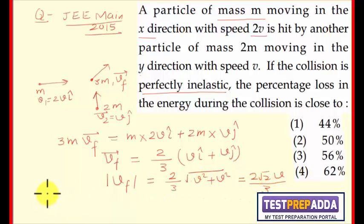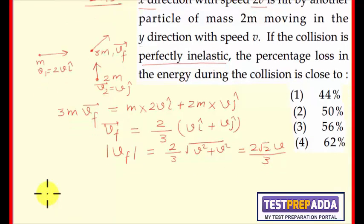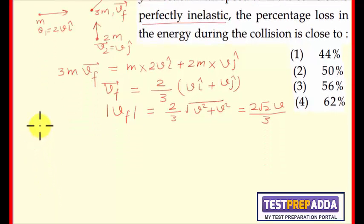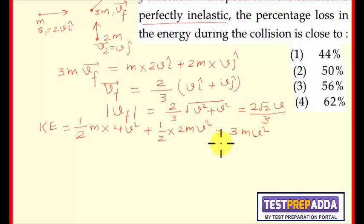Since we need to find the percentage loss in energy during the collision, I'll find the kinetic energy before collision. This is KEi equals half m times (2v)² plus half times 2m times v², which equals 3mv². This is kinetic energy initial.